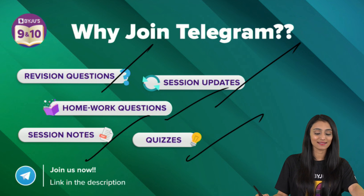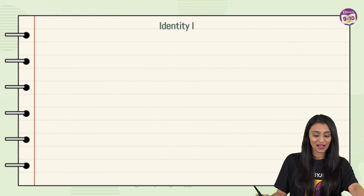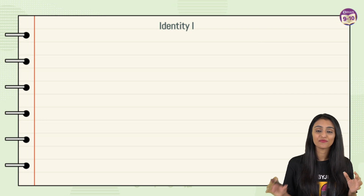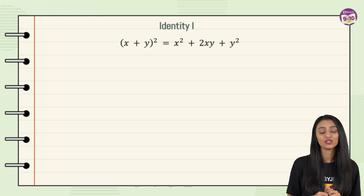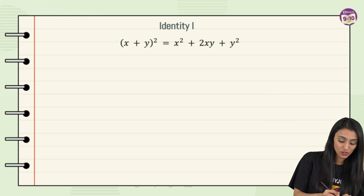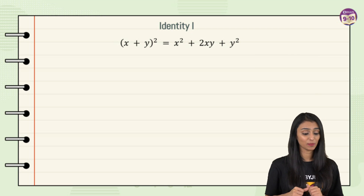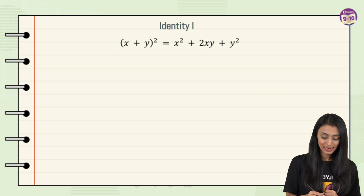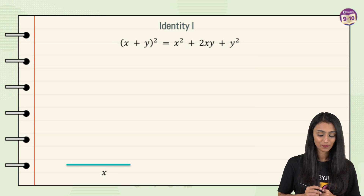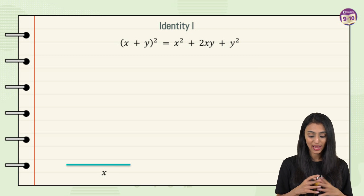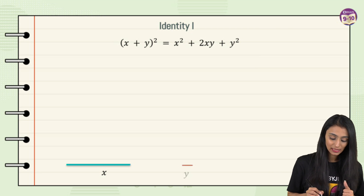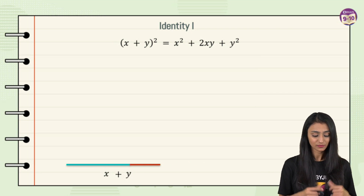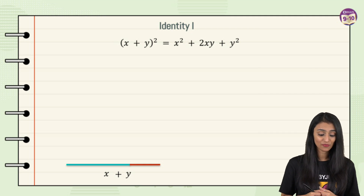Let's get started. We will be visualizing algebraic identities. The first identity we are going to see is (x + y)², which we know equals x² + 2xy + y². Let's visualize how it actually comes about. Suppose we take a line of length x units, then take another line of length y units and add them up — we get a side of length x + y units.